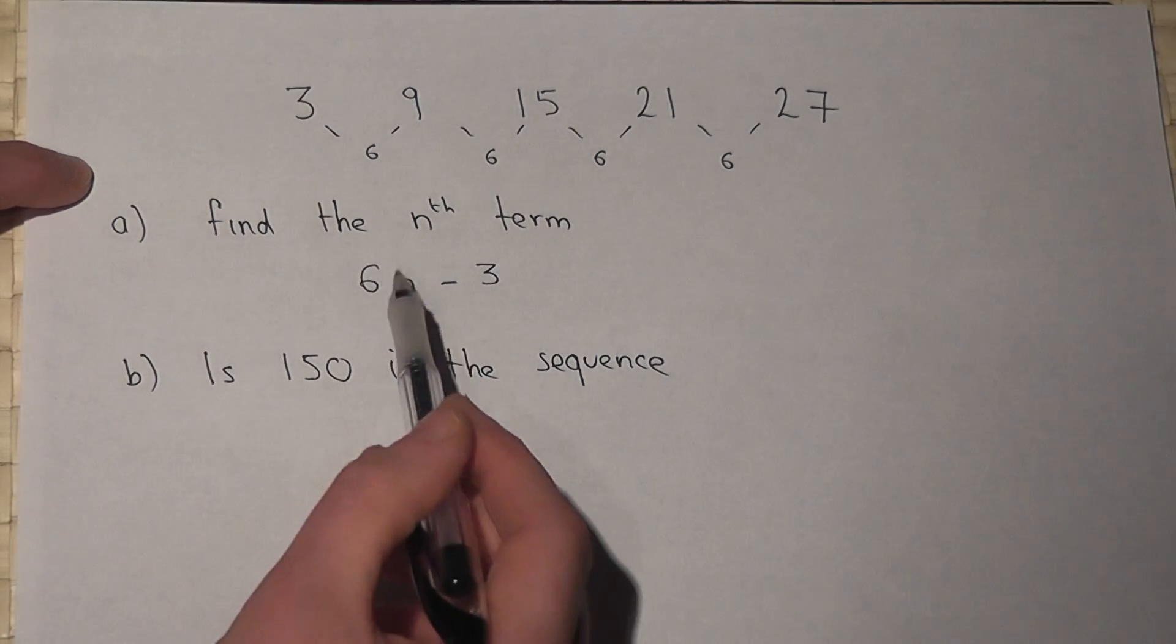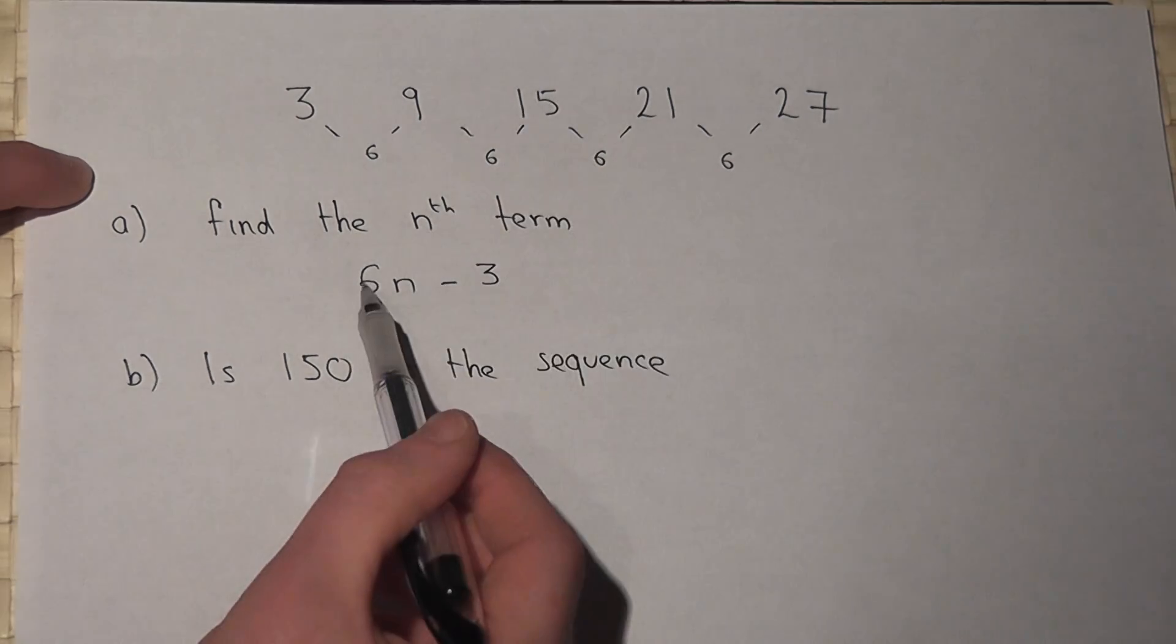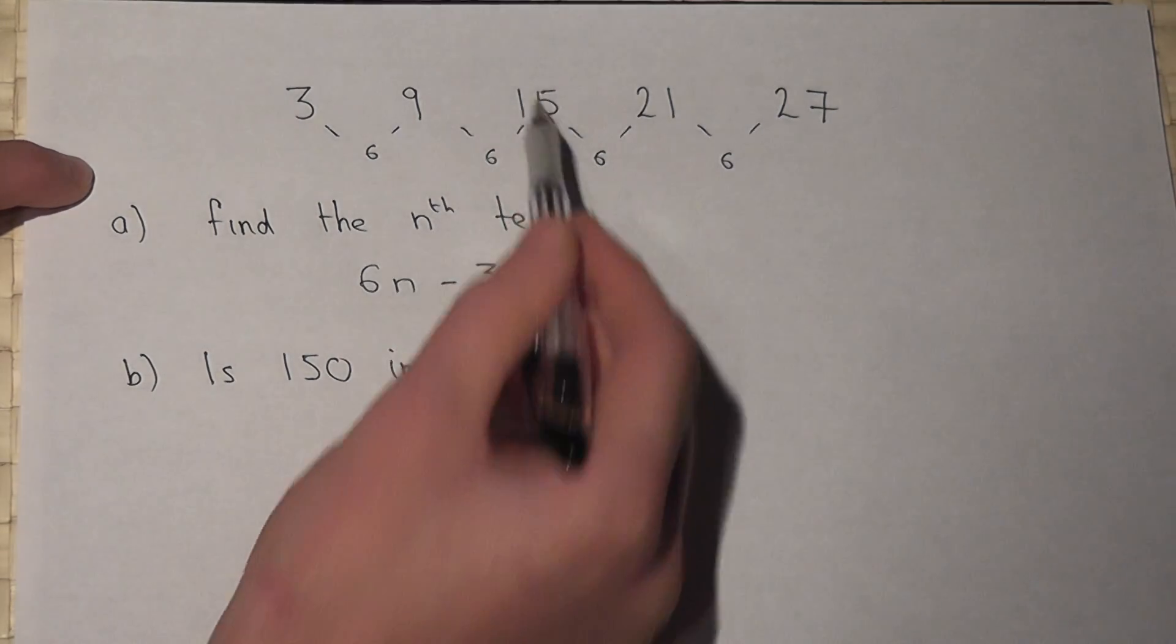If n is 2, 6 times 2 is 12, take 3 is 9. If n is 3, 6 times 3 is 18, take away 3 is 15.